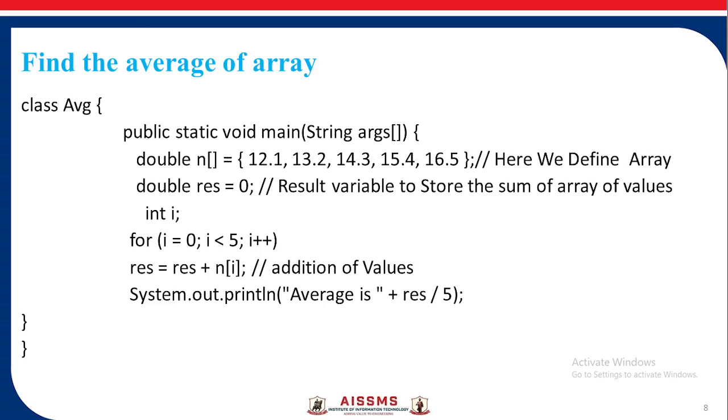Here I want to find out average of an array. We have taken a class AVG. We have declared, instantiated and initiated the array of the double data type. Then we have taken a variable result which will store the sum of the arrays. We have applied the for loop and added all the values of the array, and then we have printed the average by using average is the sum divided by total number of values present in that array, that is result res divided by 5.